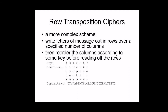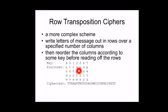Another transposition technique uses a numeric key, for example 4-3-1-2-5-6-7. The plaintext 'attack postponed until 2am' is written into the matrix row by row, with any remaining cells filled with X, Y, Z. Then columns are read out in the order specified by the key to form the ciphertext. This is the keyed transposition or Rail Fence technique.